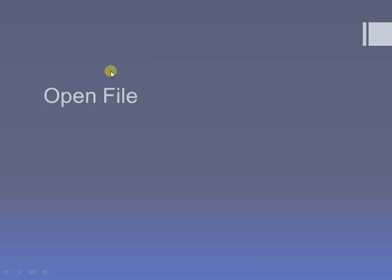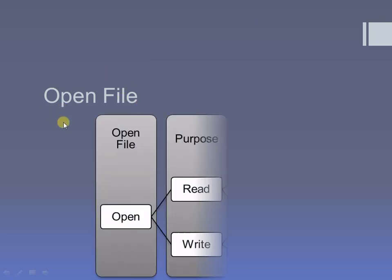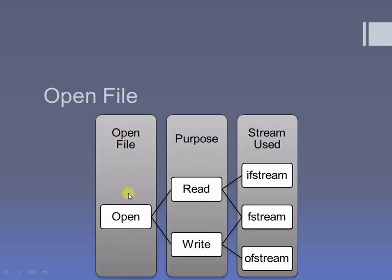Now let's continue with the open file function. Whenever you think about opening a file, you must finalize a purpose — for which purpose you are opening a file, that is for reading or for writing. Because after deciding the purpose only, you have to decide which stream you are going to use. If you want to perform only a read operation, you have to use the ifstream class.